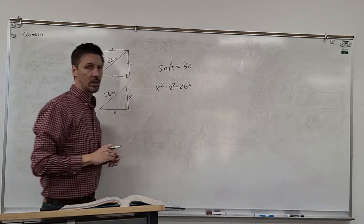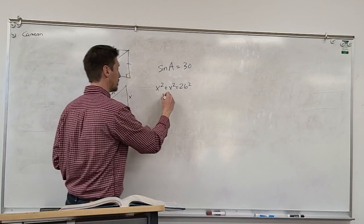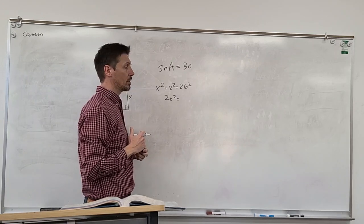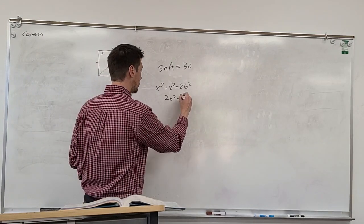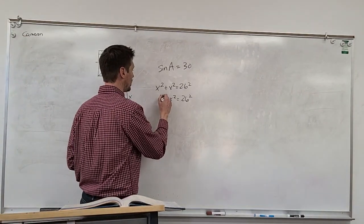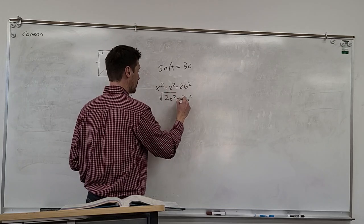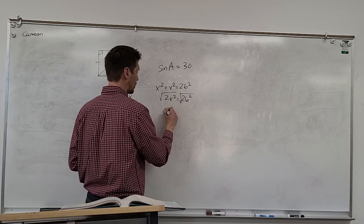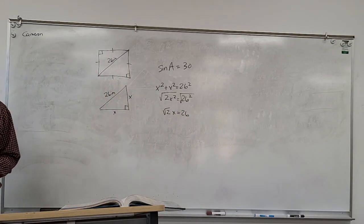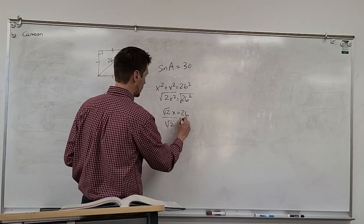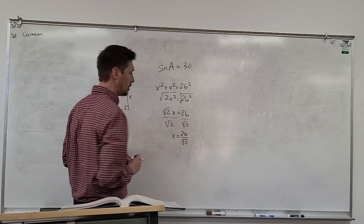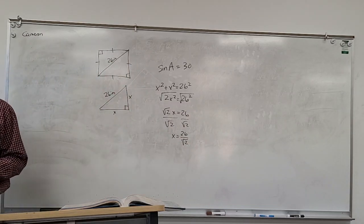So what is x squared plus x squared? 2x squared, right? And then 26 squared — I'm going to take the square root of both sides so then it goes away. And so over here I've got the square root of 2x equals 26. Does everybody agree with that? Okay. And so divide both sides by square root of 2, and x equals 26 over square root of 2.